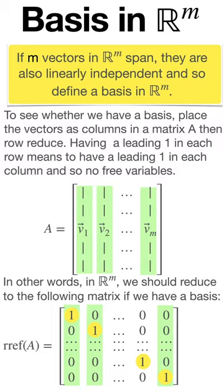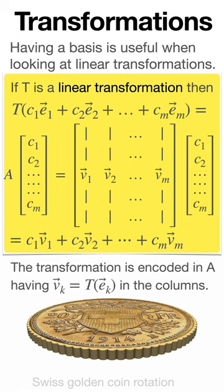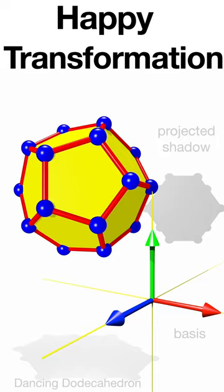A transformation is determined by the image of the standard basis vectors. The matrix A of T has these images in the columns. Happy transformations!